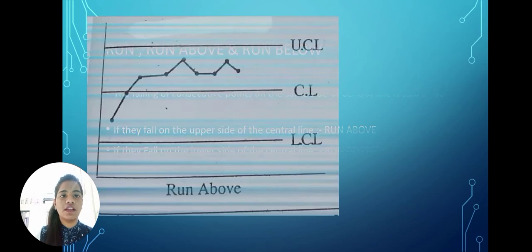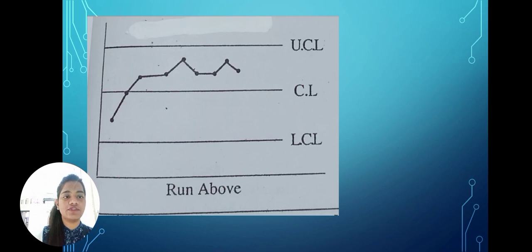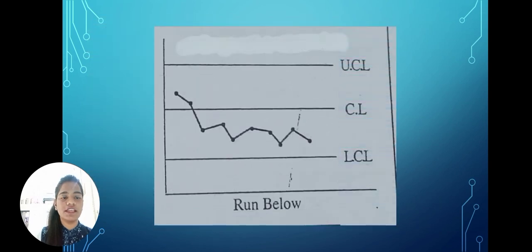Now I am going to explain the graphs. Here you can see the run above graph. UCL stands for Upper Control Limit, CL stands for Central Line, and LCL stands for Lower Control Limit. Here you can see that all the points are falling on the upper side of the center line, so it is a run above graph.